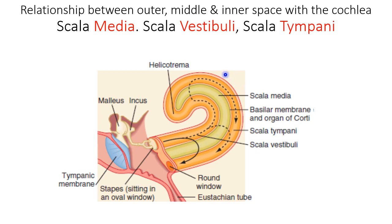The cochlea is a spiral-shaped organ. In humans, the spiral consists of two and three-fourths turns with a broad base and a narrow apex. The bony labyrinth component of the cochlea is subdivided into several chambers.